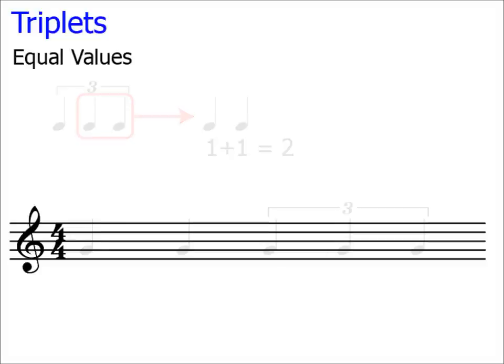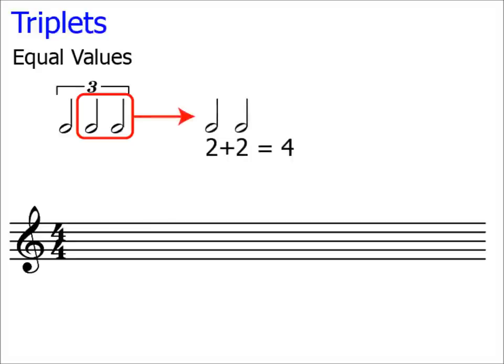Let's look at some triplet minims. As the note values are equal, we take just 2 of the note values, 2 minims, and together they equal 4. In other words, triplet minims are equal to a rhythmic value of 4. Or, to put it another way, triplet minims are played in the same time as 2 minims.